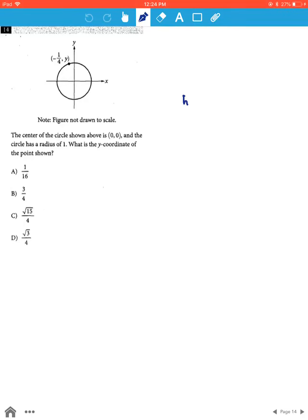The center of the circle, that is h, k, is given to us as 0, 0 and the radius of the circle is 1.